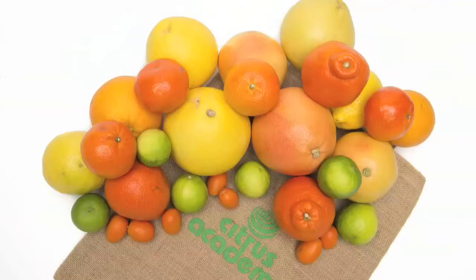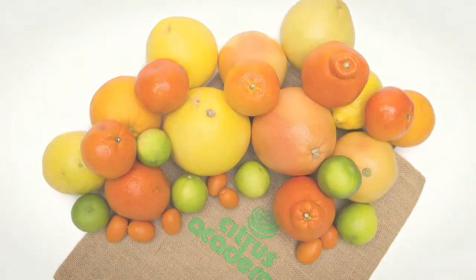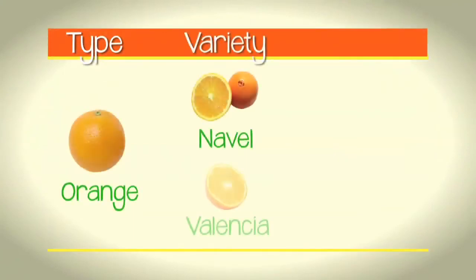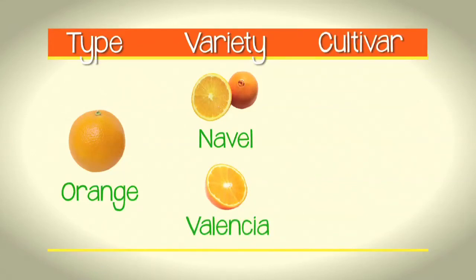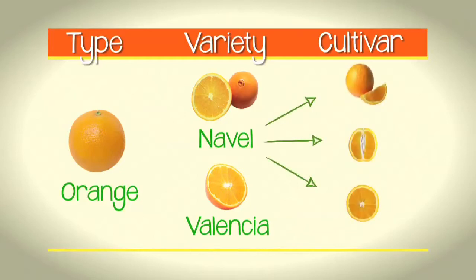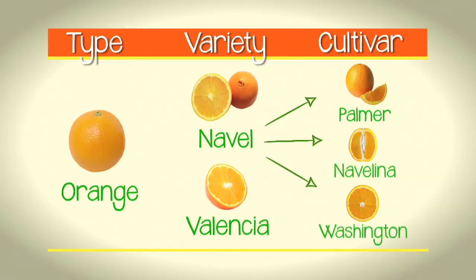Variety is the term used to divide citrus types into different kinds. For instance, oranges can be divided into navels or Valencias. Cultivar means cultivated variety, and can be used to further distinguish between fruit of the same variety. Cultivars of navel oranges include Palmer, Navelina, and Washington.